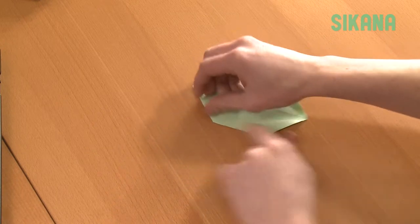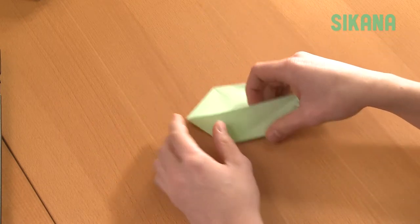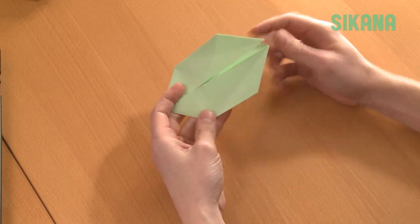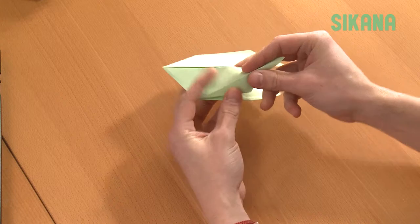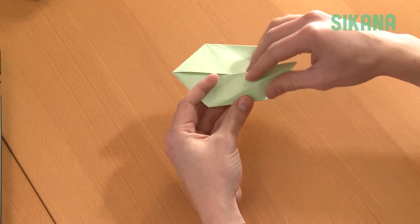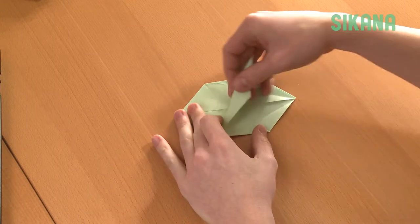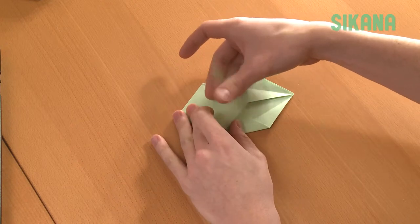The next fold is a bit more complicated. Watch closely. Fold this point inward and then back like this. Then, bend this part back.